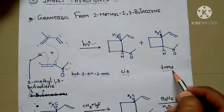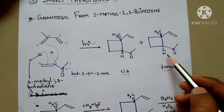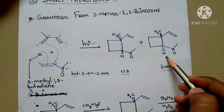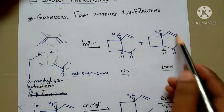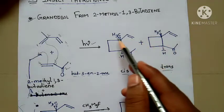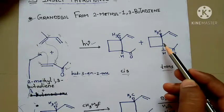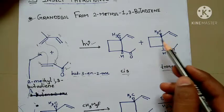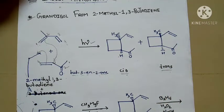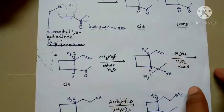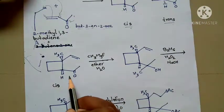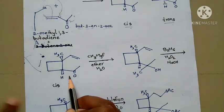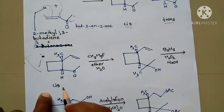Why is it trans? Because CH₃ and hydrogen are on opposite sides. All remaining parts are the same — only the simple cyclization process is done. Out of the cis and trans products, we have to select the cis form.